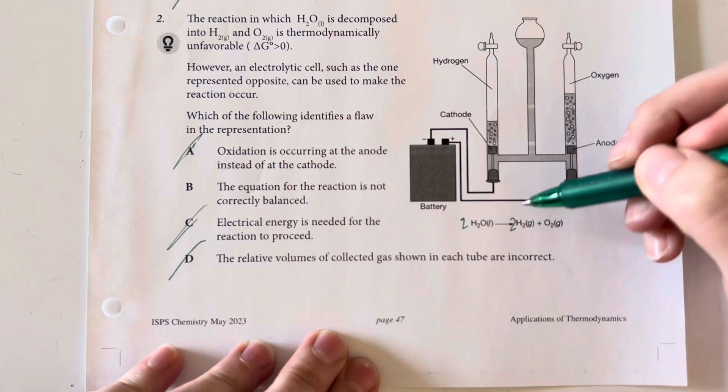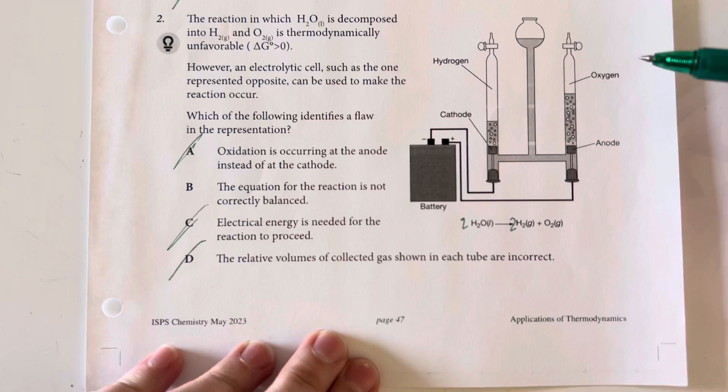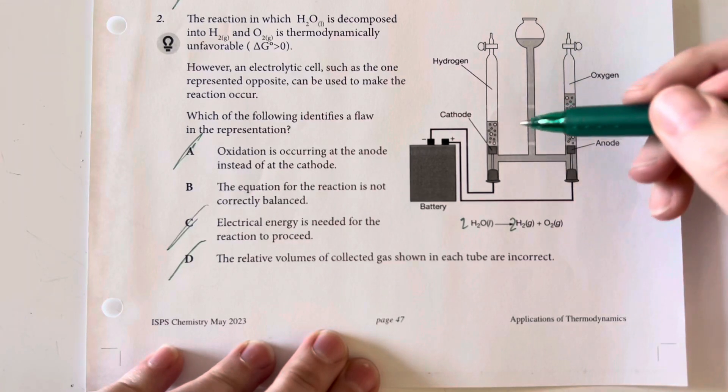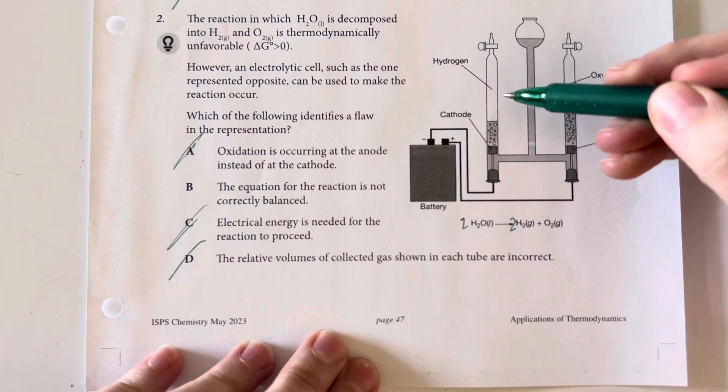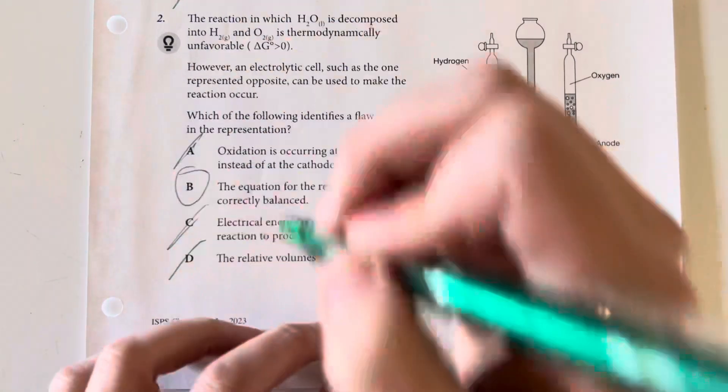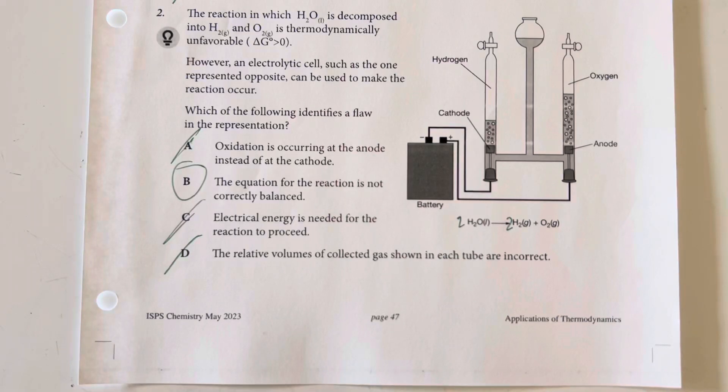Also, that hydrogen is smaller, and these are not actually ideal gases, and so hydrogen is going to take up slightly less space than oxygen. So, option choice B, where we have the equation not being correctly balanced, is going to be our biggest problem with that representation.